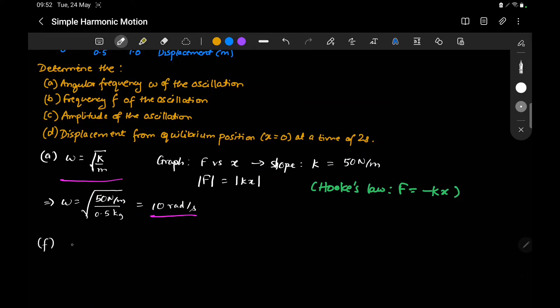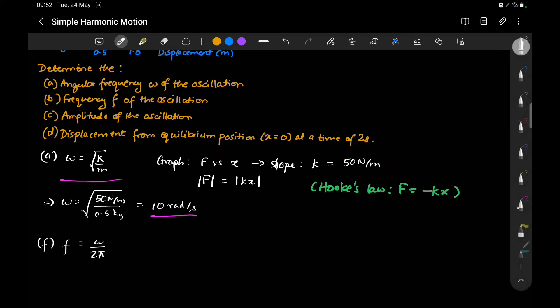Frequency f = ω/2π. From part A, ω = 10 rad/s, so f = 10/2π ≈ 1.6 Hz.